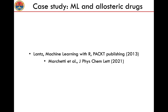As a last example, I will talk about how to use machine learning algorithms to provide a correct classification of allosteric compounds of the heat shock protein 90 chaperone into activators or inhibitors. This work was published a few months ago and was led by Alessandro Pandini at Brunel University in London and Giorgio Colombo at Pavia University in Italy.